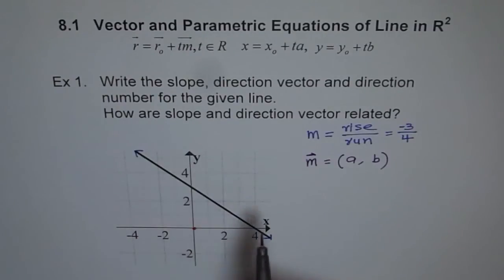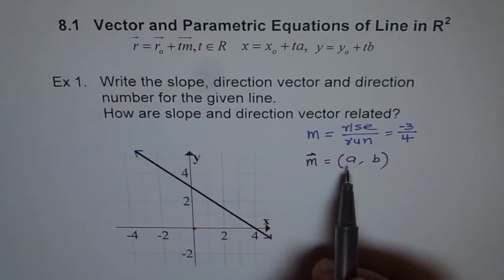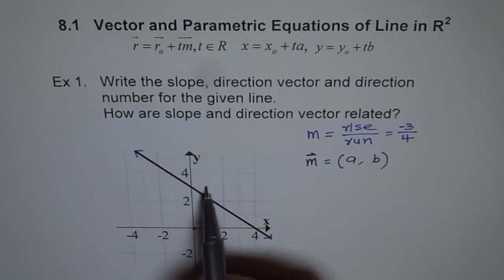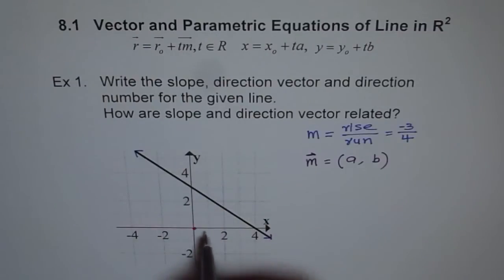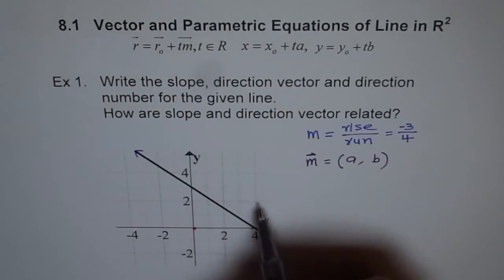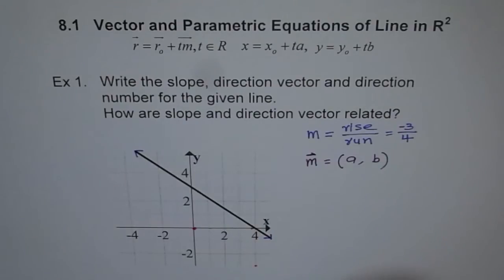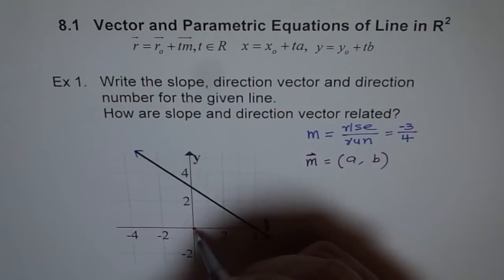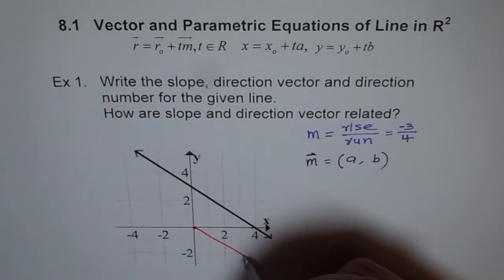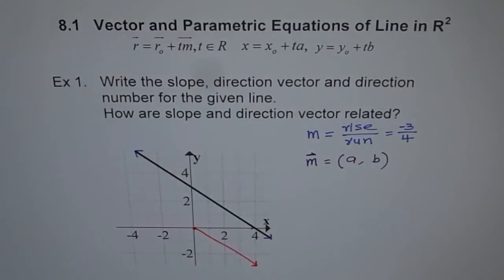Think of it like this: to get from one point to another on this line, we go x first. From the origin, we go 1, 2, 3, 4 places in x — so we reach four units across. Then from there, we go 1, 2, 3 down. So this point is where we end up, and the direction vector joins the origin to this point. That is my direction vector for this particular line.